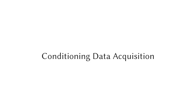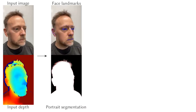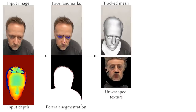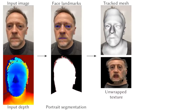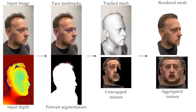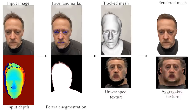With the trained universal prior model, we can build a personalized avatar model for one user. We first acquire the geometry and texture of the user's neutral face. For each frame, we run face landmark detection and portrait segmentation algorithms on the input RGB image. We then fit and deform a template mesh to match the detected landmarks, the segmentation silhouette, and the input depth map. We unwrap the texture of each frame, then aggregate all of them to obtain a complete face texture.